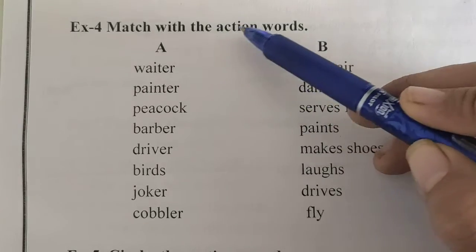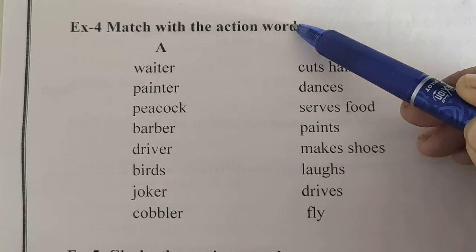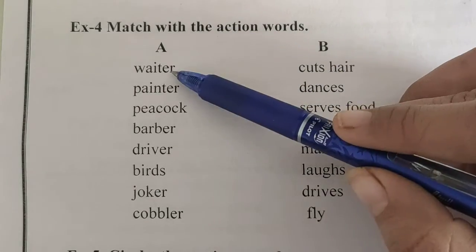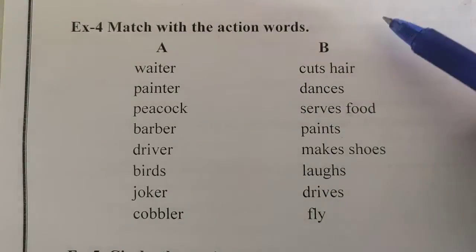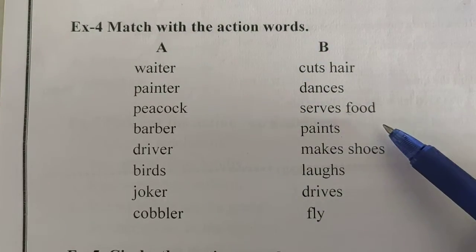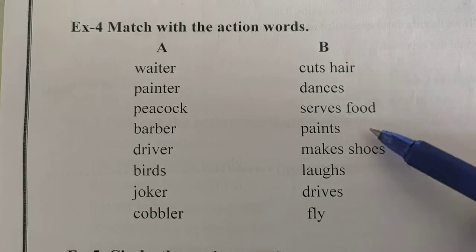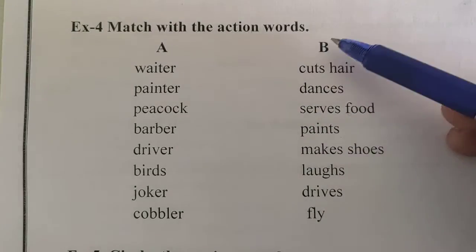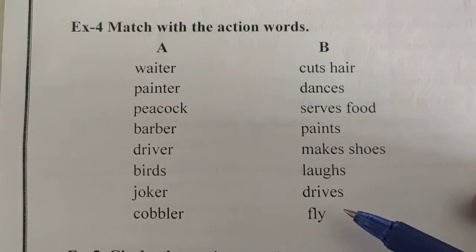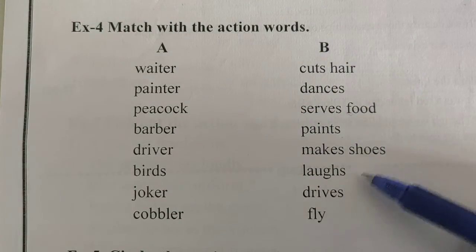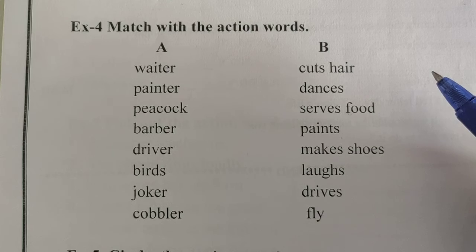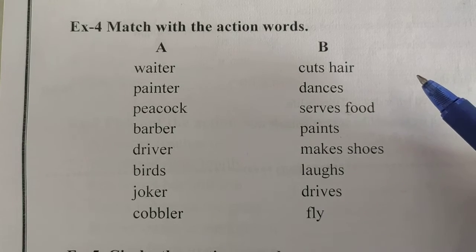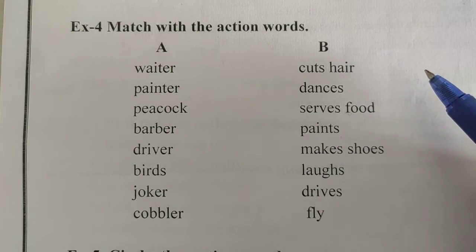Match with the action words. Here, A and B parts are given. In the A part, names are given, and in the B part, activities and actions are given. We have to match the correct ones.